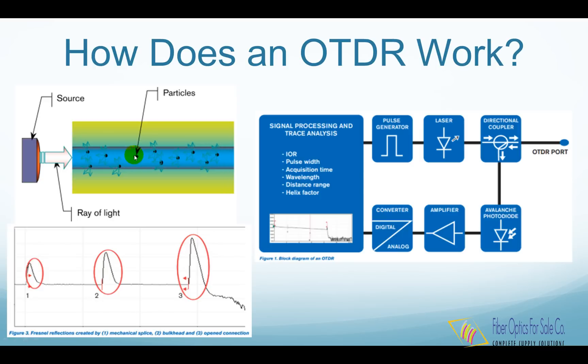When hit, some particles redirect the light in different directions, creating both signal attenuation and backscattering. The second type of reflection is called Fresnel reflection.